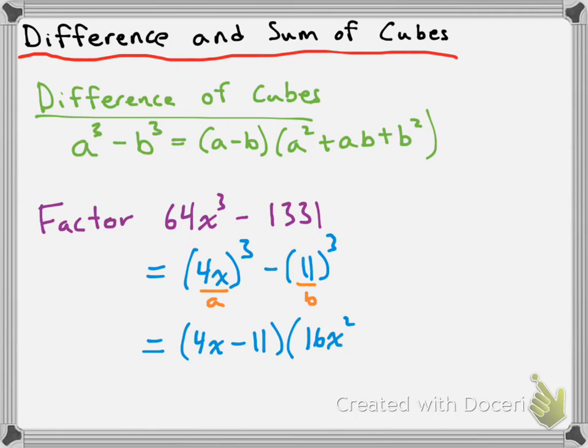So a squared, well, since our a is 4x, we do 4x all squared. 4x times 4x is 16x squared. And then we have plus a times b. So a is 4x, b is 11, so 4x times 11 is plus 44x.